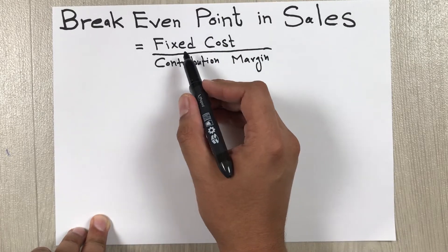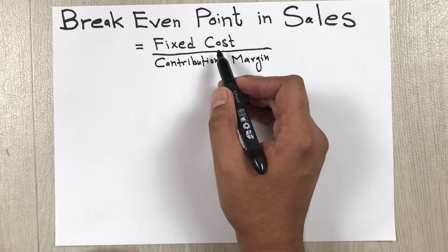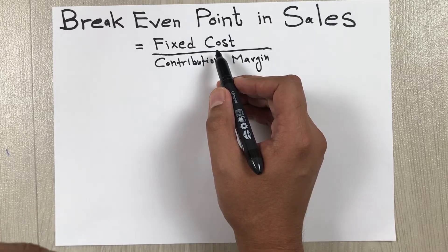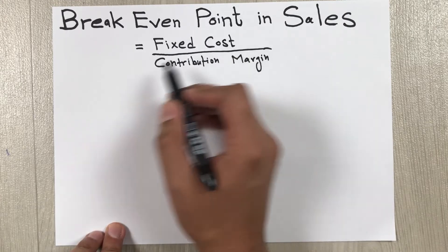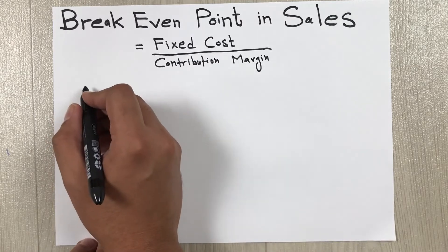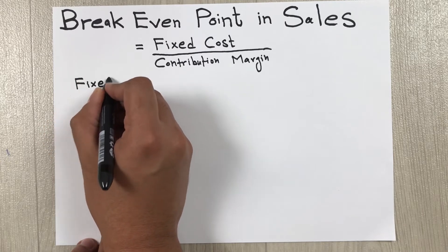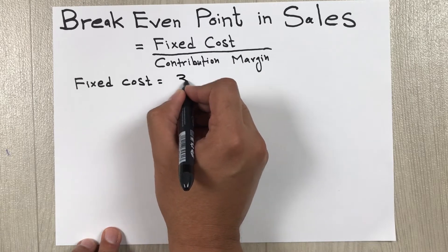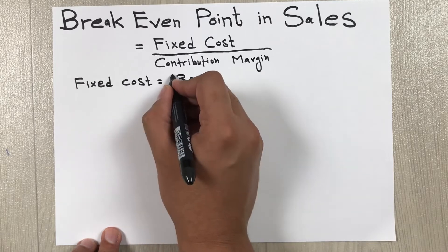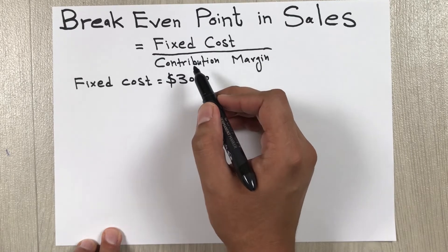Fixed cost is the cost that does not change with your sales or production. Examples of fixed cost are rent and machinery. Let's say our fixed cost is $3,000. So I will write here: fixed cost is $3,000.